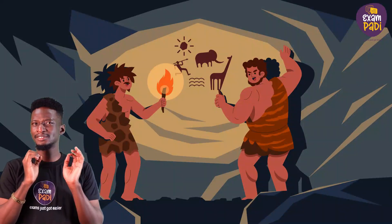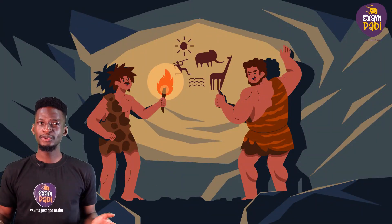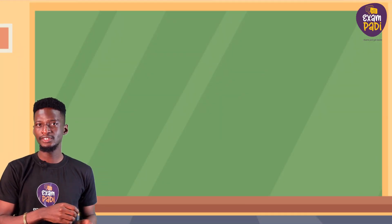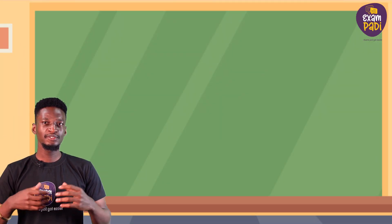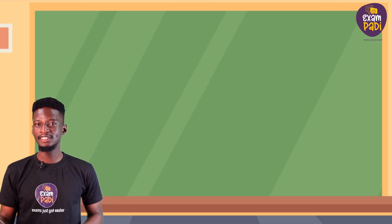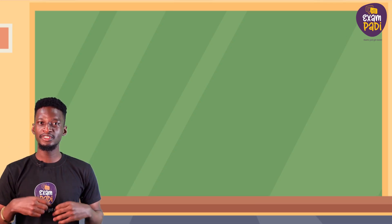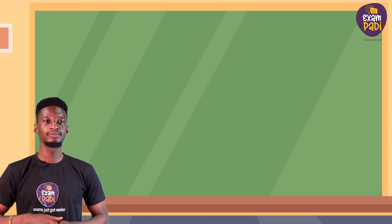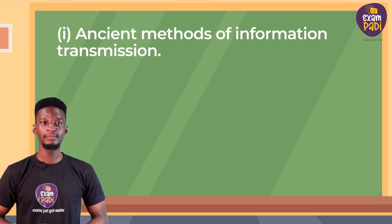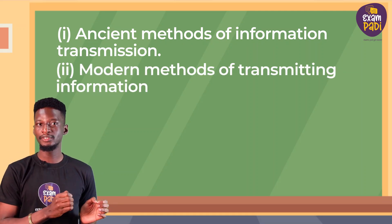Human beings have been transmitting information since ancient times. Information becomes relevant to the productive world if it leaves the source to the users. For information to reach the users, there are channels or methods of transmitting information. The two methods include: 1. Ancient methods of information transmission, and 2. Modern methods of information transmission.